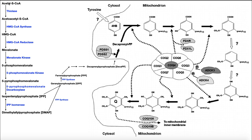We begin with acetyl-CoA. Two molecules of acetyl-CoA are condensed into acetoacetyl-CoA by thiolase. Then HMG-CoA synthase is going to convert acetoacetyl-CoA, with an additional acetyl group from acetyl-CoA, into HMG-CoA, which is beta-hydroxy-betamethyl-glutaryl-CoA.